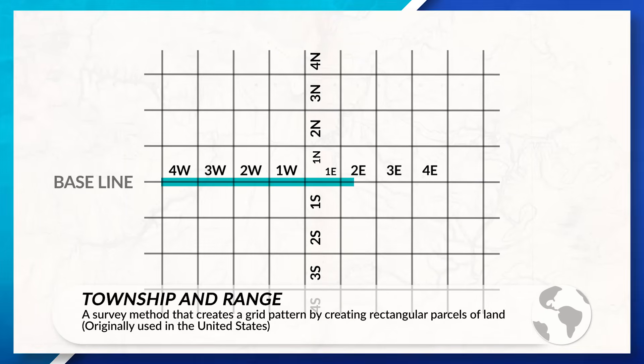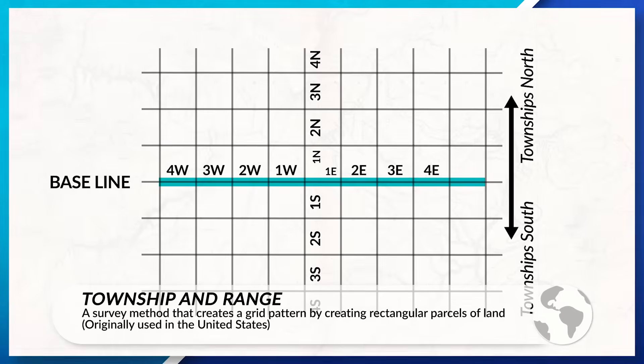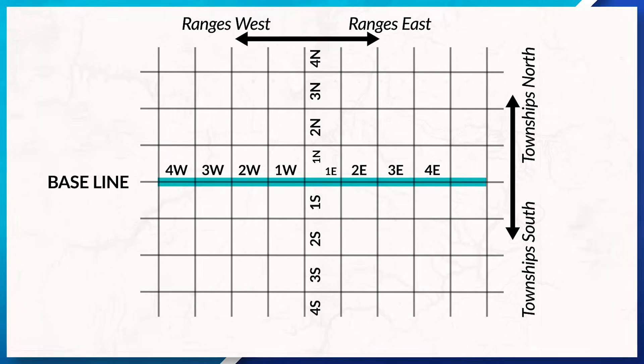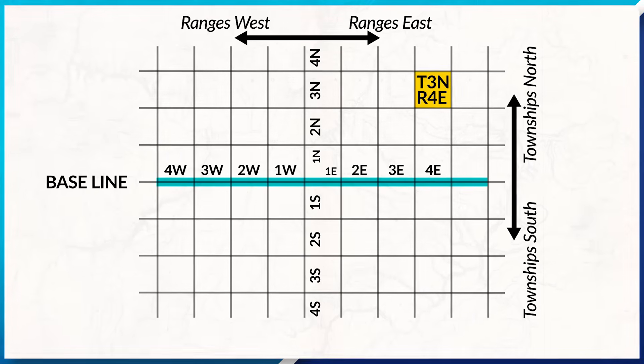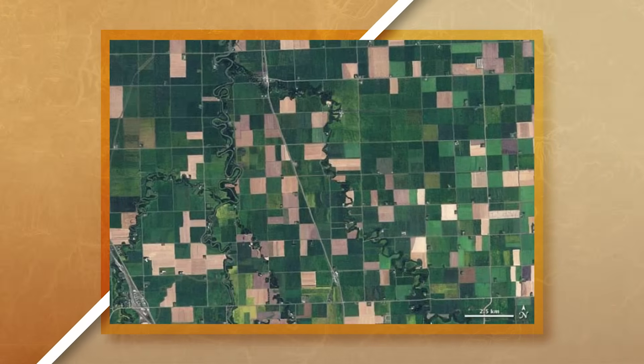When looking at the township and range survey method, we use a baseline, with townships going north to south and range going west to east. This survey method uses longitude and latitude to create a grid system. This is a lot more organized compared to metes and bounds and creates clear and distinct pieces of land, making it easy for people to clearly identify who owns what land, which makes it easier to sell and manage the land — especially important for a country with a large population.